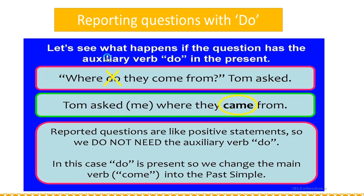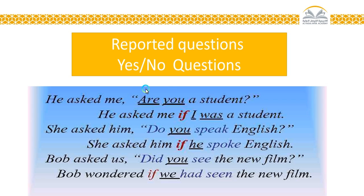Reporting questions with 'do': let's see what happens if the question has the auxiliary verb 'do' in the present. 'Where do they come from?' Tom asked me where they came from. We remove 'do' and add 'me.' Reported questions are like positive statements, so we do not need the auxiliary verb 'do.' Since 'do' is present, we change the main verb 'come' into the past simple: 'came.'